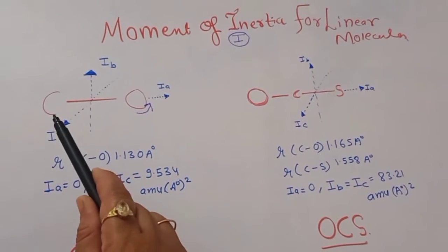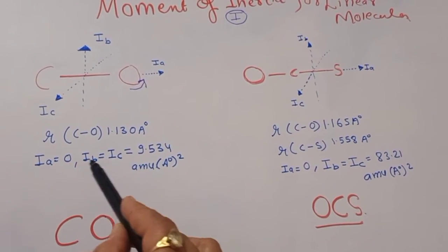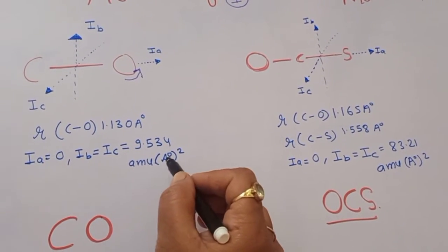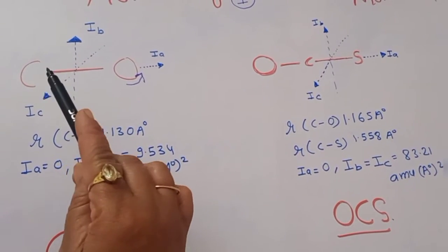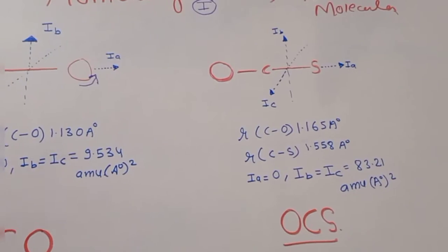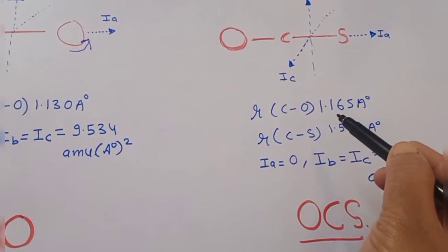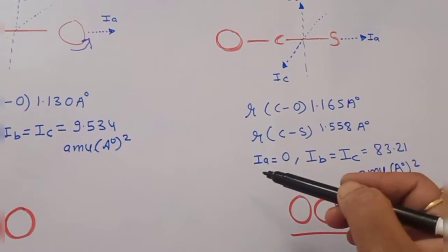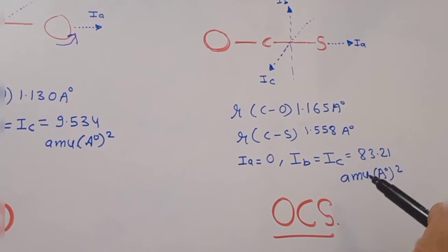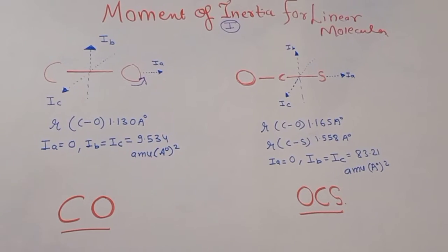For CO, Ia = 0 because rotation along the molecular axis contributes no inertia, and Ib = Ic = 9.534 amu·Å². The bond length r(C–O) = 1.130 Å. For OCS, r(C–O) = 1.165 Å and r(C–S) = 1.558 Å. Since OCS is linear, Ia = 0 and Ib = Ic = 83.21 amu·Å².